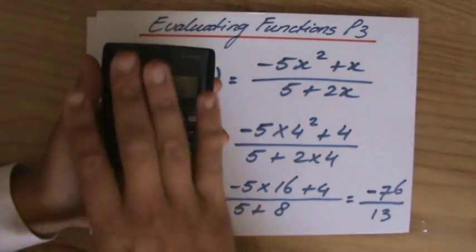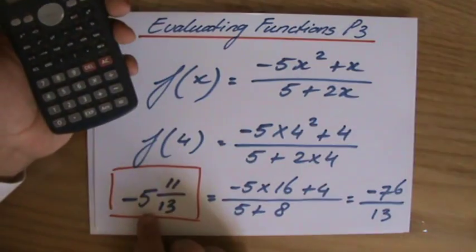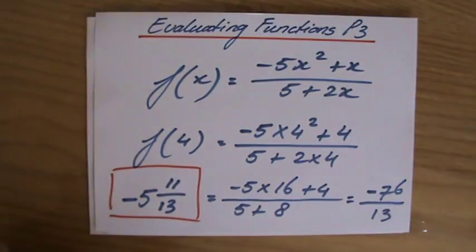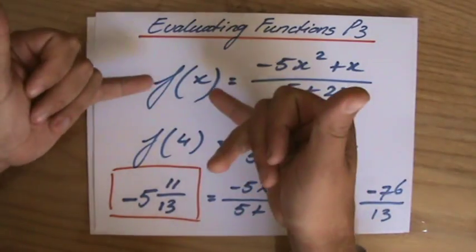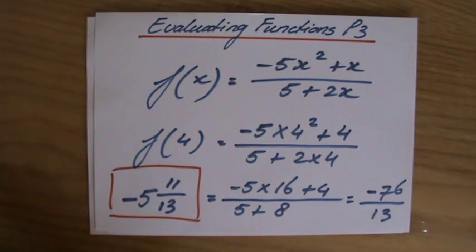Again, you have a better looking calculator, but make sure that you write it down as a mixed number rather than leaving it as a top-heavy or improper fraction. So I've evaluated f(x) for x is 4, and the answer to that is minus 5, 11 over 13.